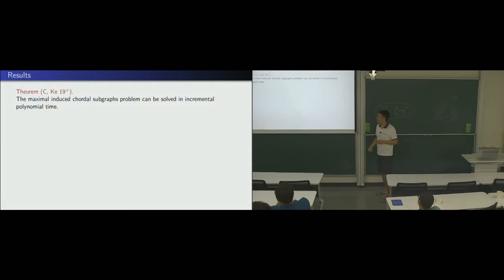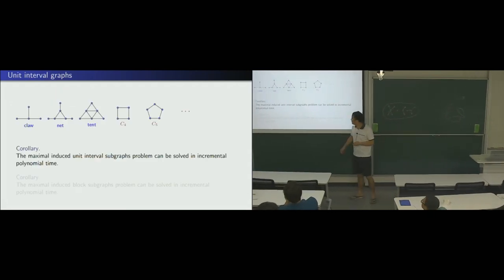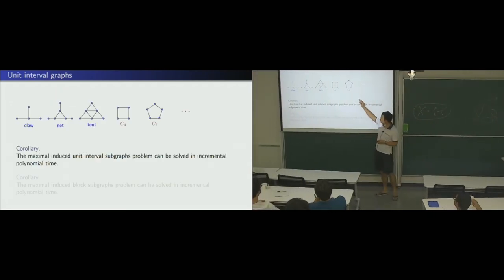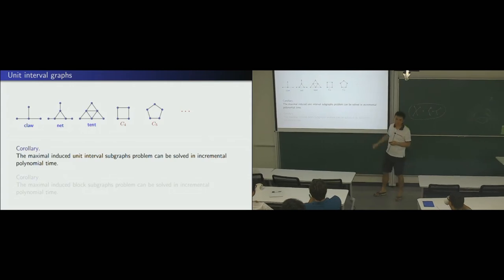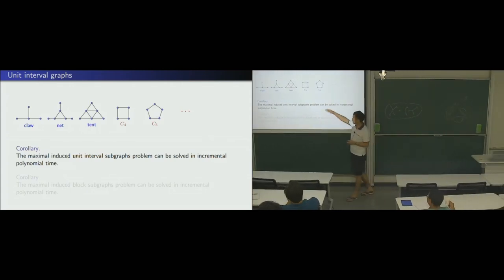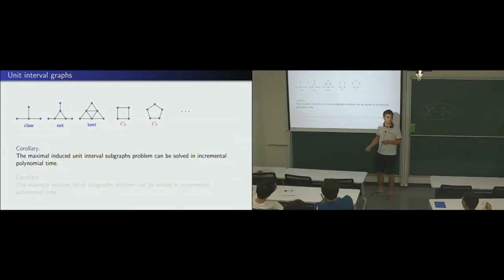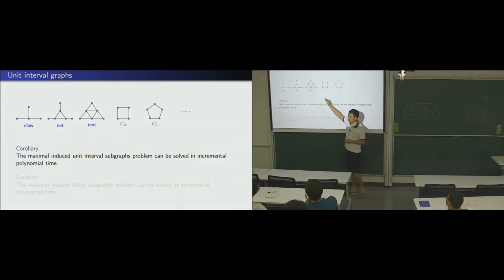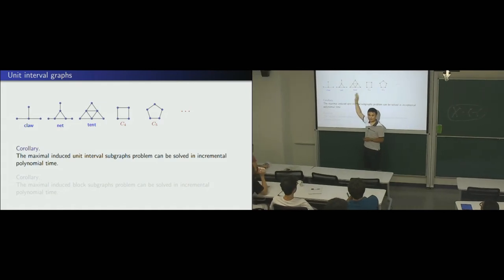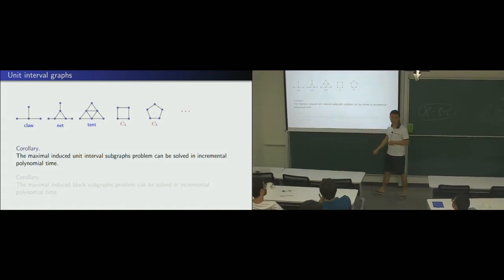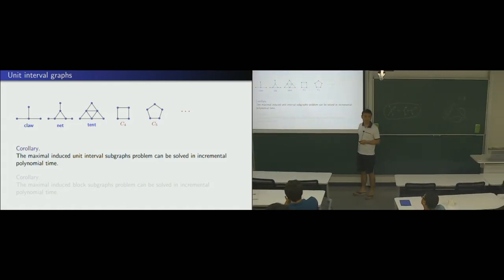So, maybe we can discuss. So, the next line, this implies, the same result for unit interval, because, this is, kind of simple, because, now you have something like this. So, if you require z to be, t to be six. So, somehow, they are gone. So, now, you are, doing the same problem as chordal. So, similarly, you can do the block graph.